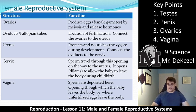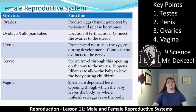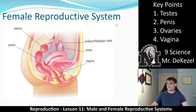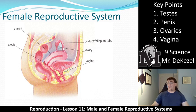Ovaries are like the testes, except for females. They produce eggs, which are female gametes, and this is done by meiosis. They also release hormones. The ovaries are right here — you can see that this is kind of like an egg sac. You have two of them, although we're only showing one. And we have this tube or hand that seems to wrap around. The ovary is the place where eggs are formed.